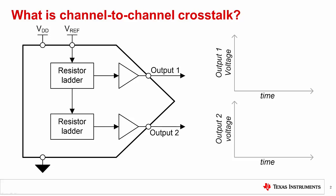First, let's start by defining channel-to-channel crosstalk. In a basic sense, crosstalk is defined as an output change on one channel of a multi-channel DAC affecting another channel. There are two types of this crosstalk: AC and DC.